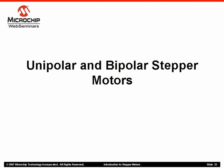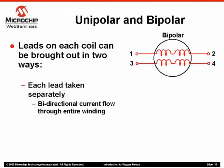Now that we have seen some of the types of stepper motors available, let's take a look at sub-variations of both the permanent magnet and hybrid motor types. These two sub-categories are determined by how the leads from each phase winding is brought outside of the motor.